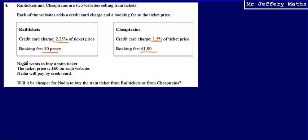So it then tells us that the ticket price is £60 on each website. So the initial cost for Rail Tickets is £60 and the initial cost for Cheap Trains is £60. And then they have different credit card charges and booking fees. And we're asked which one will it be cheaper for Nadia to buy? So will it be cheaper to buy from Rail Tickets or will it be cheaper to buy from Cheap Trains?